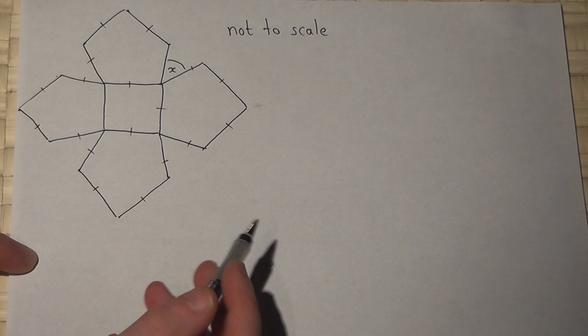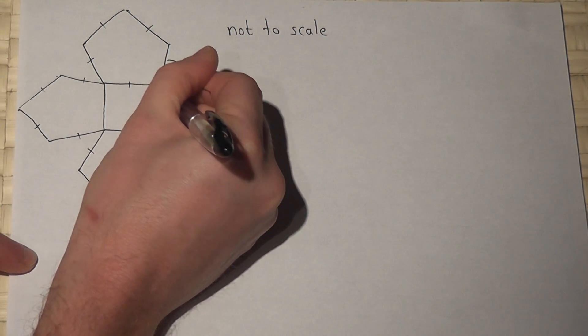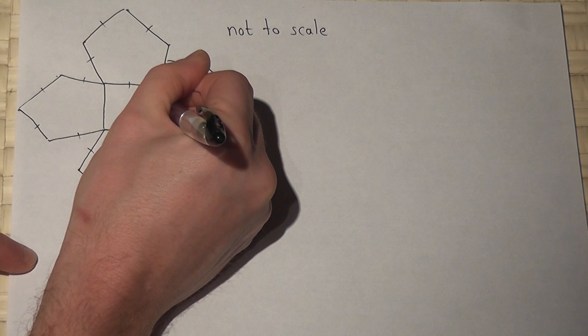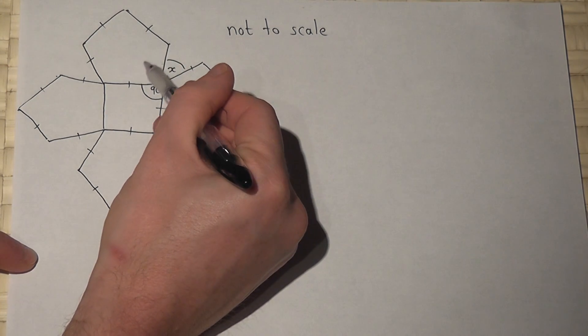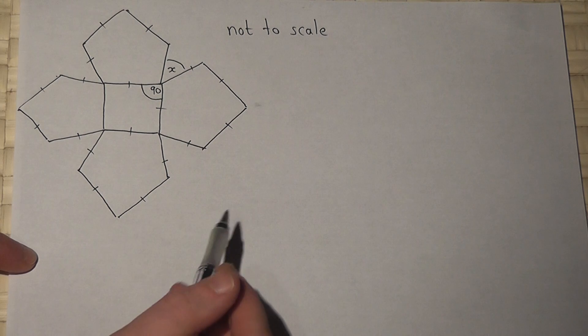Now we therefore know that the angles in the square must be 90 degrees. That's a given. We can also find the size of one of the angles inside a pentagon.